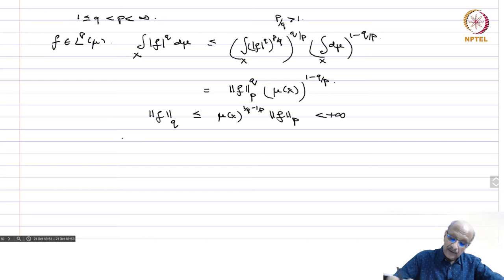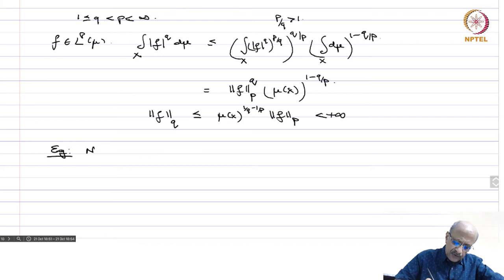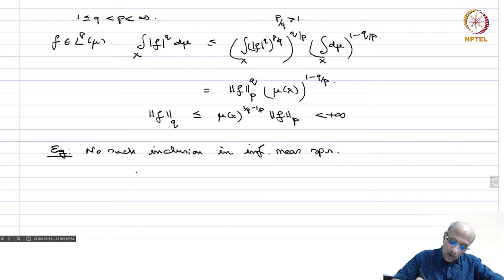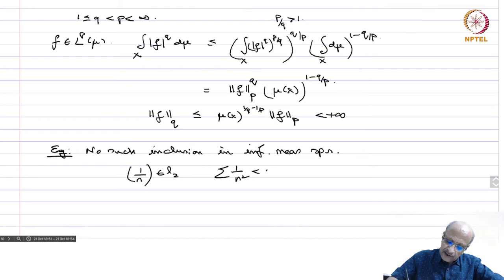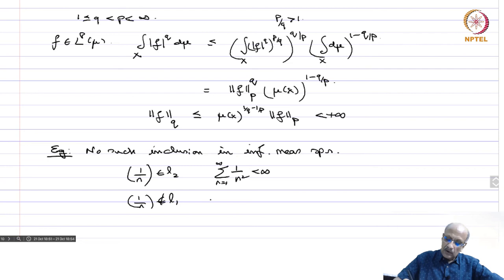Now some other examples showing there is no such inclusion in infinite measure spaces. The sequence 1/n belongs to ℓ2 because Σ(1/n²) is finite — it equals π²/6. But 1/n is not in ℓ1 because Σ(1/n) diverges. So something being in ℓ2 does not imply it is in ℓ1 for infinite-dimensional spaces.